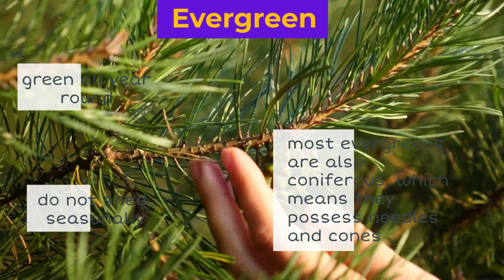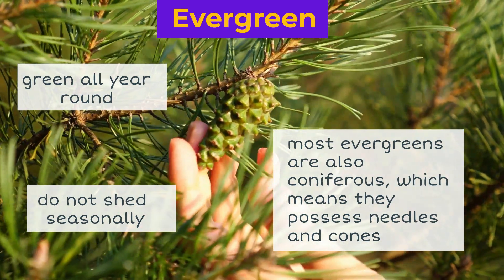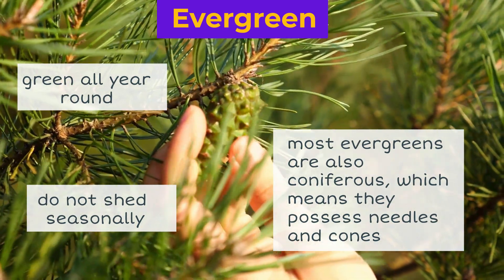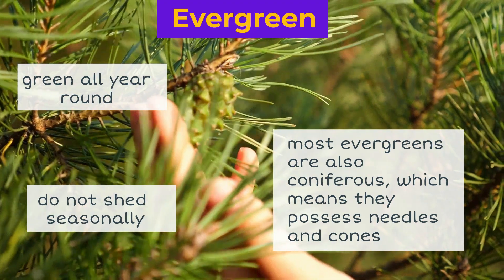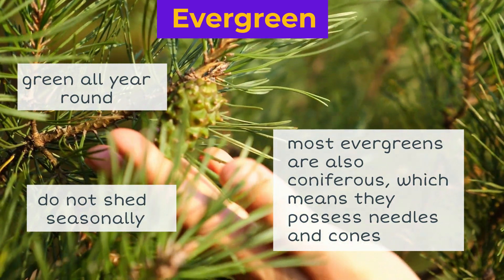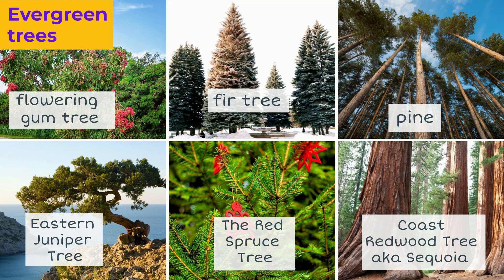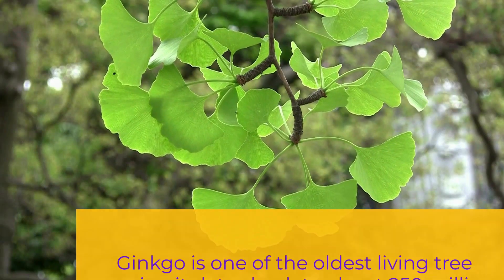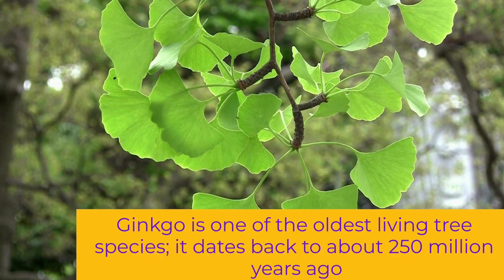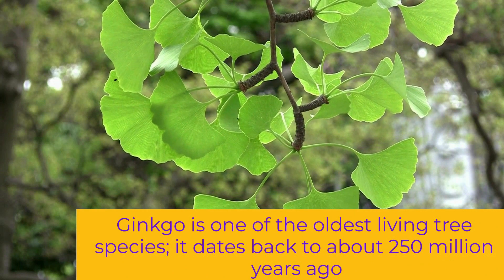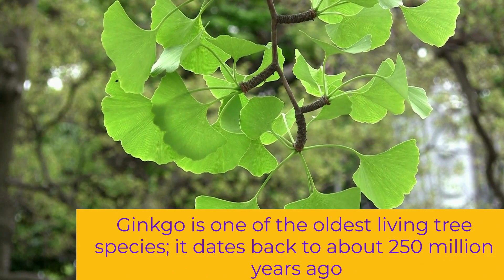Evergreen trees are green all year round and do not shed seasonally. Most evergreens are also coniferous, which means they possess needles and cones. Examples include: flowering gum tree, different types of fir trees and pines, eastern juniper tree, the red spruce tree, and coast redwood tree, also known as sequoia. They have a life expectancy of more than a thousand years. By the way, ginkgo is one of the oldest living tree species — it dates back to about 250 million years ago.